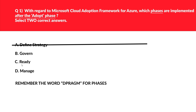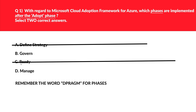Let's look at option C, that is Ready. If you look at the mnemonic again, R comes just before A. If you look at the question, it's asking after Adopt — not before. Hence we'll reject option C as it seems incorrect.